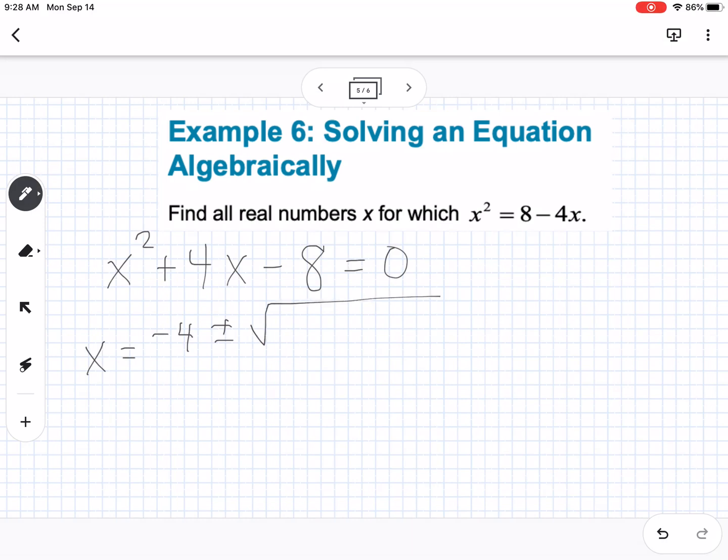So I'm going to say x equals negative 4 plus or minus square root of 4 squared minus 4 times a is 1 and c is negative 8 over 2 times 1. So then I take my calculator, I'm going to simplify underneath the square root. So 4 squared minus 4 times 1 times negative 8 gives me 48. So I have x equals negative 4 plus or minus the square root of 48 over 2.